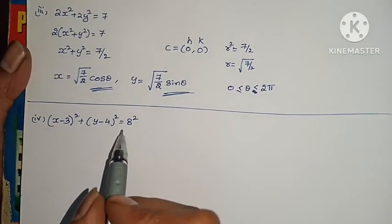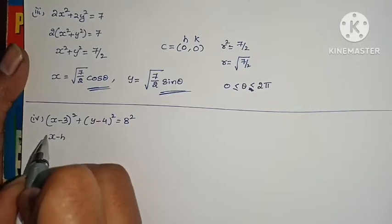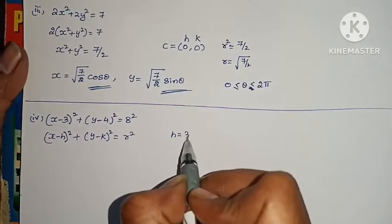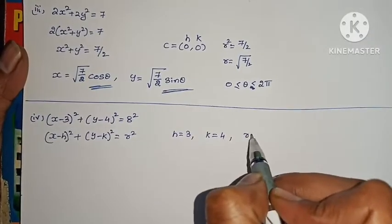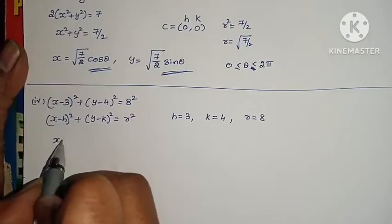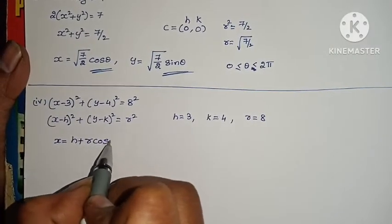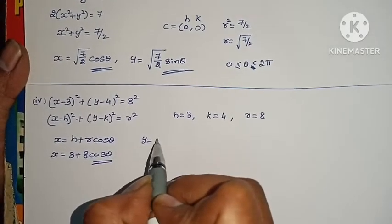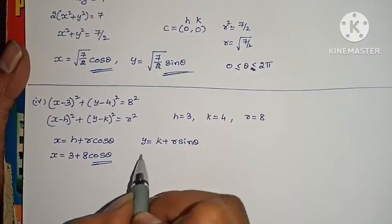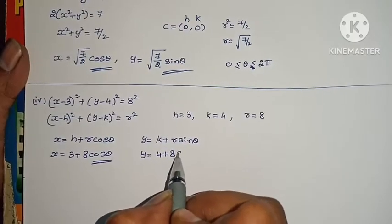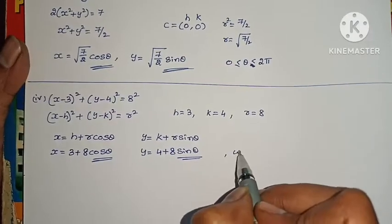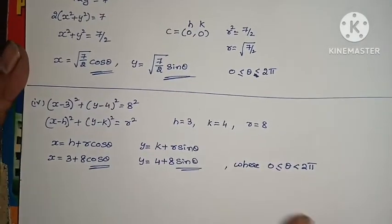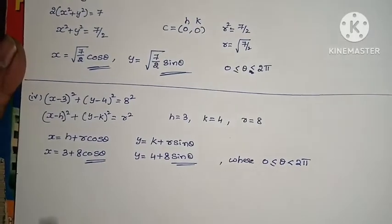For the circle (x minus 3) squared plus (y minus 4) squared equals 8 squared, this matches the standard form (x minus h) squared plus (y minus k) squared equals r squared. So h equals 3, k equals 4, r equals 8. Therefore: x equals h plus r cos theta gives x equals 3 plus 8 cos theta, and y equals k plus r sin theta gives y equals 4 plus 8 sin theta, where 0 less than or equal to theta less than 2 pi.